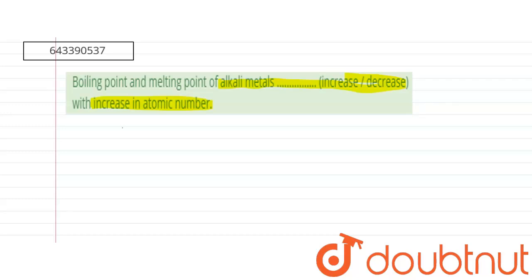The alkali metals are lithium, sodium, potassium, rubidium, and caesium. When we go down the group, atomic number increases.